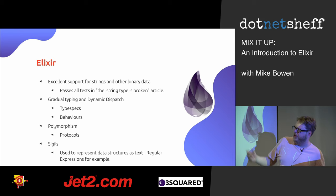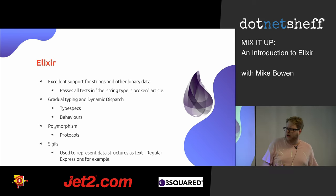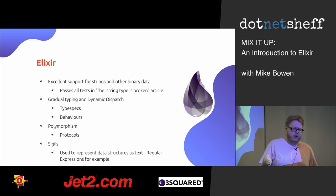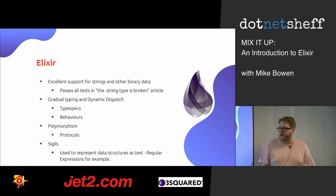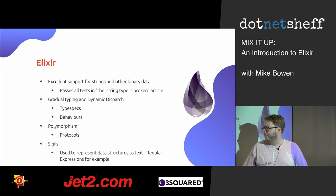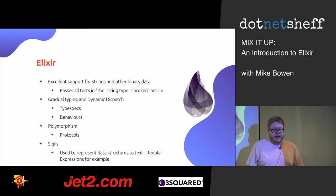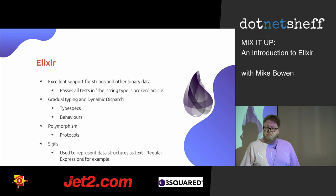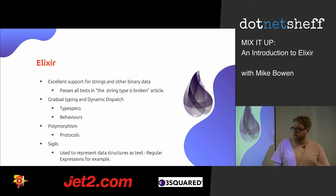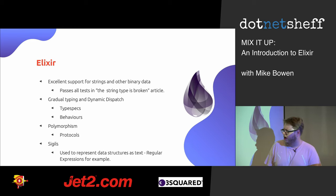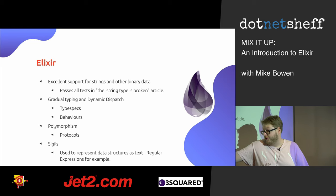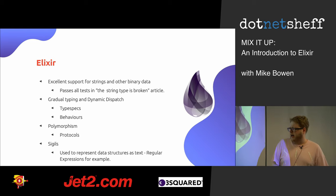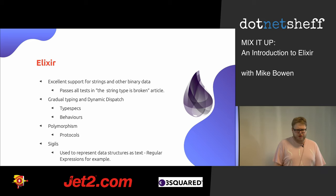We have what I would term gradual typing. Even though it's a dynamic language, you have the option to define things called type specs, which are basically function signatures — that ties in with the tooling to get some nifty code analysis. Behaviors are analogous to interfaces in .NET — they define a set of function signatures, and any module you create can implement them. Polymorphism is supported by protocols, which are like mini interfaces. And sigils are used to represent data structures as text — so you can do literal regexes, literal URLs, or anything like that.